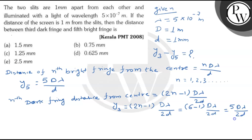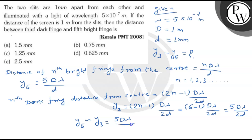Now we take the difference between the fifth bright fringe and the third dark fringe: y₅ − y₃ = 5·D·λ/d − 5·D·λ/(2d), which simplifies to (5/2)·D·λ/d.